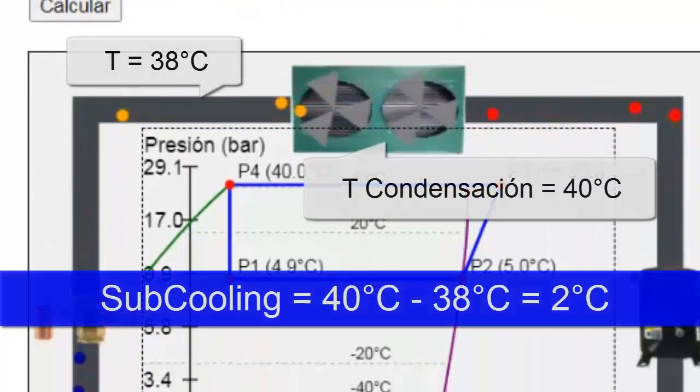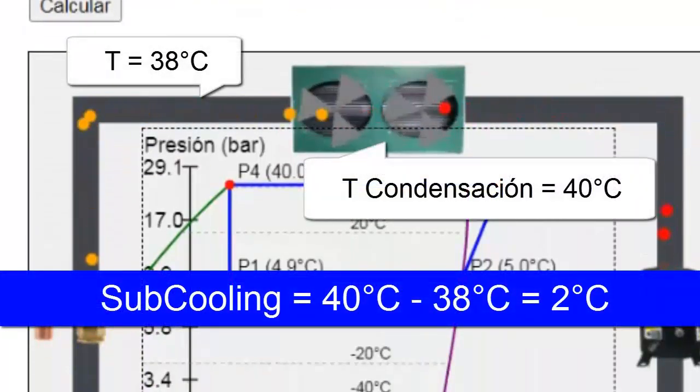Subcooling is the decrease in refrigerant temperature when it is in liquid phase at the condenser outlet, improving system efficiency. For example, if the outer surface of the condenser is clean and has adequate airflow, slightly higher subcooling values can be achieved.